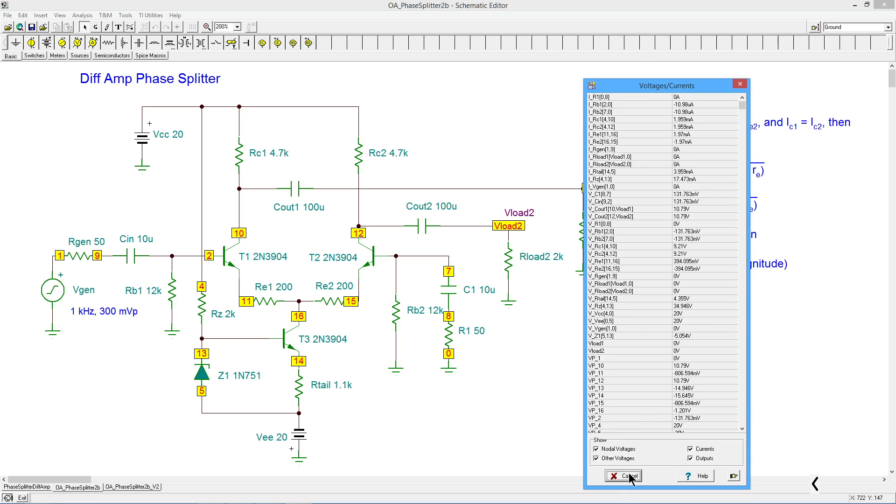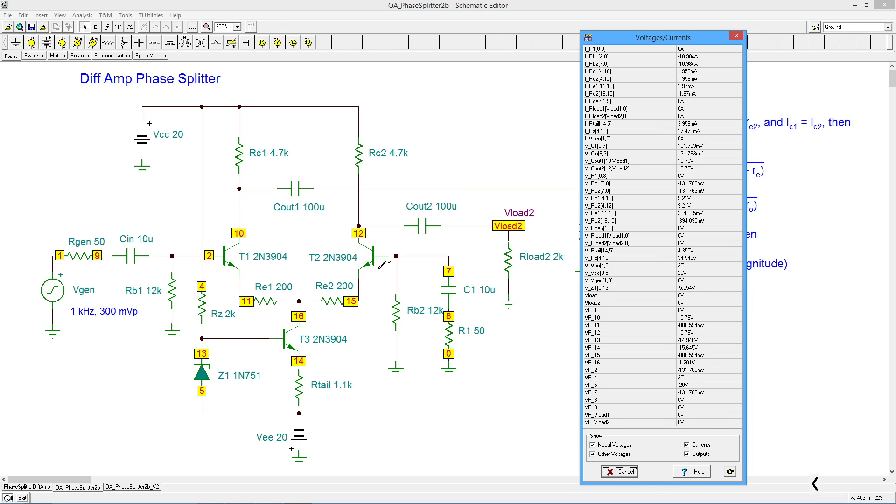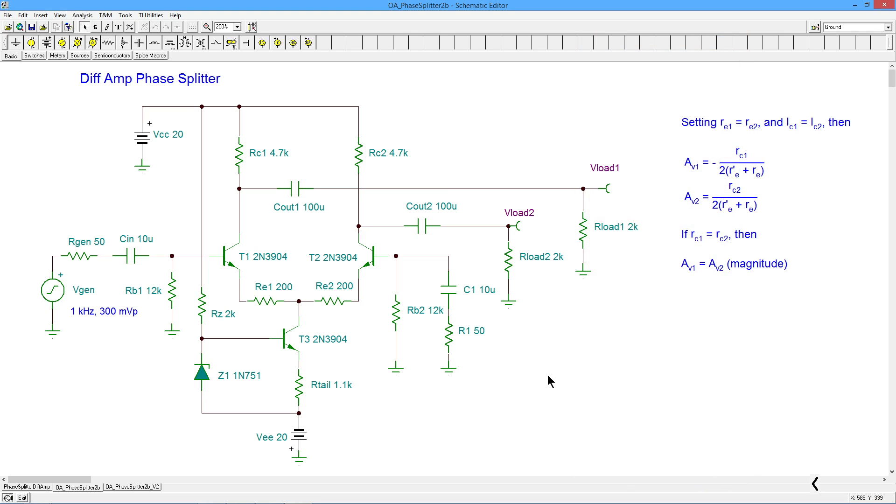All right, so let's do a DC analysis and verify that we are getting the sorts of things we expect. So tail current, we're getting 3.959, virtually four mils as we expected. That's what we expected to see, half of that in each of these. So there's 1.959 for that one. That looks good. We're getting 10.79 for that collector and 10.79 for that collector. Okay, so the DC looks good. We have the current we expect, the voltages we expect. Happy, happy, joy, joy.